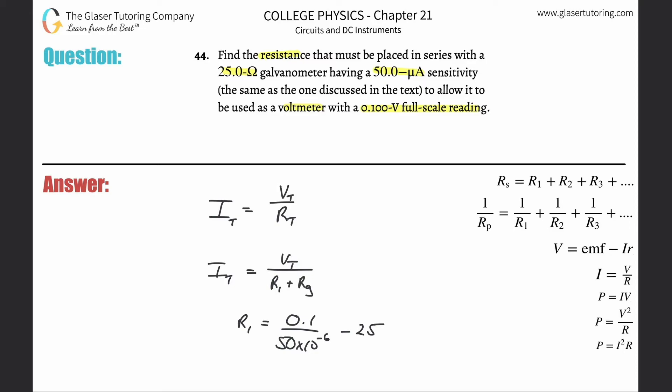So let's plug that into the calculator. So 0.1 divided by 50 times 10 to the minus 6, and then we're going to subtract 25 from it.